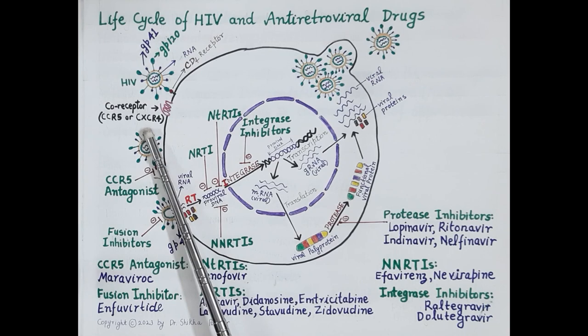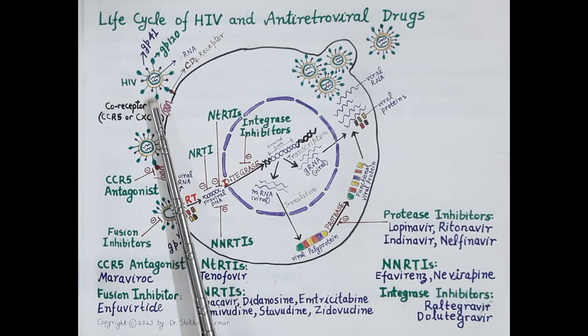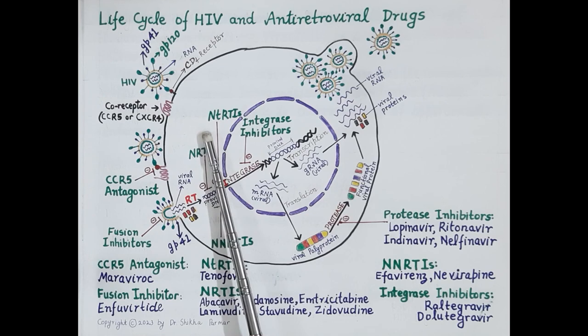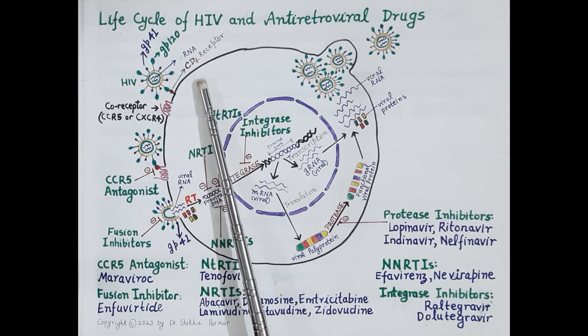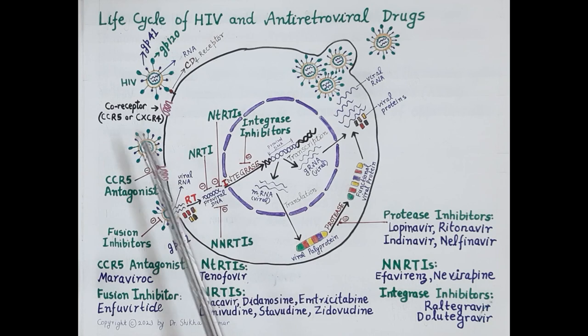This is the structure of HIV. HIV consists of two copies of single-stranded RNA surrounded by a capsid and an outer envelope. Glycoproteins like GP120 and GP41 are attached to this envelope. The primary cell attacked by HIV is the CD4-positive helper T cell. Besides helper T cells, other immune cells attacked by HIV are macrophages, monocytes, and dendritic cells.